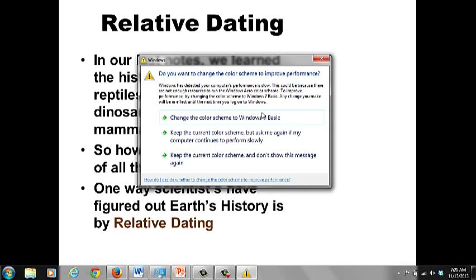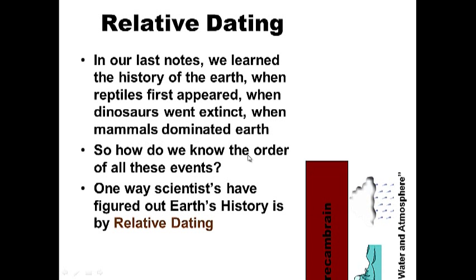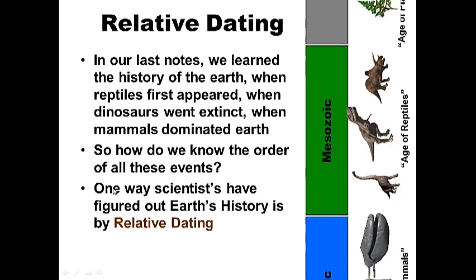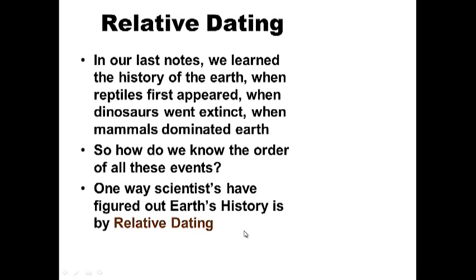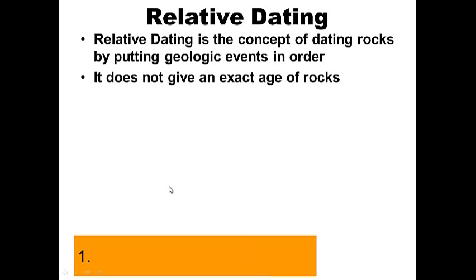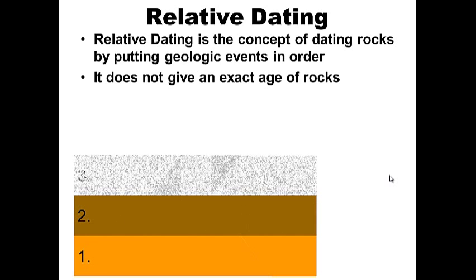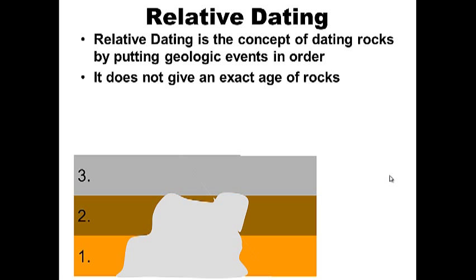In our last notes, we learned the history of the Earth — when reptiles first appeared, when dinosaurs went extinct, when mammals dominated Earth. So how do we know the order of all these events? One way scientists have figured out Earth's history is by relative dating — putting geologic events in order. Relative dating is the concept of dating rocks by putting geologic events in order; it does not give an exact age. For example, this rock layer formed first, this one second, this one third, then magma came in as the fourth event.